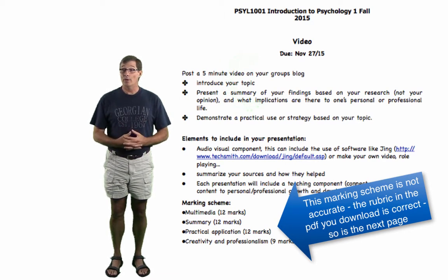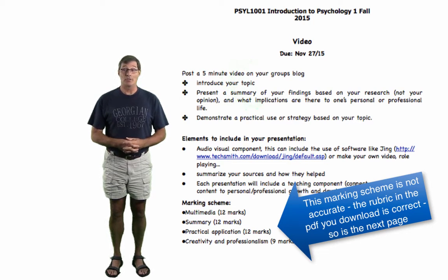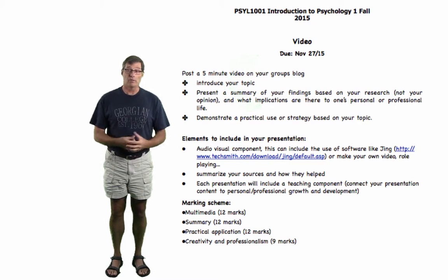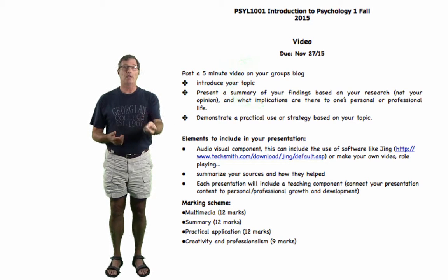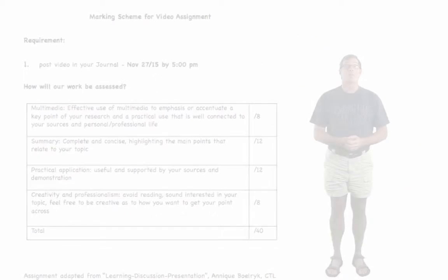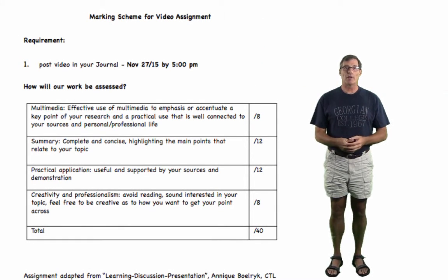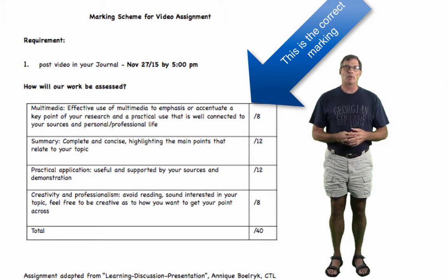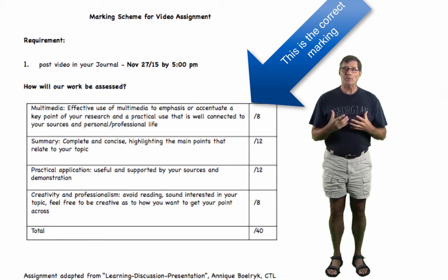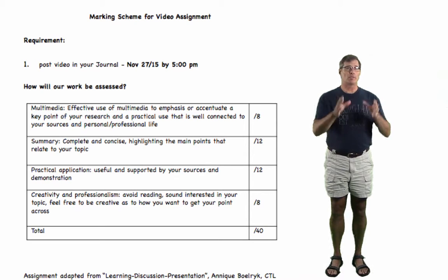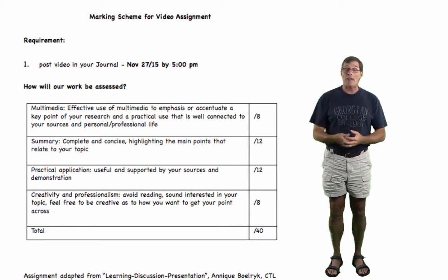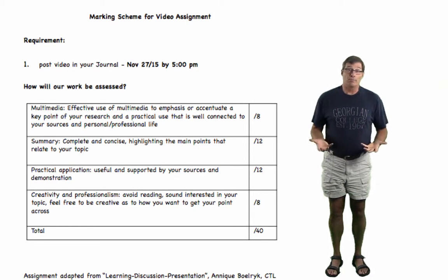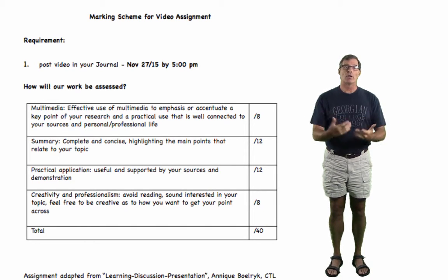I've had students do songs, role playing, and different sorts of things using different software. Five minutes needs to accomplish these basic things: what's your topic, why is it important, what does your research say, and a practical application. The rubric's first segment around creativity and multimedia is about this: please don't give me PowerPoints with just text. Be creative, find graphics that make sense, and use another method of delivering your content beyond PowerPoint.